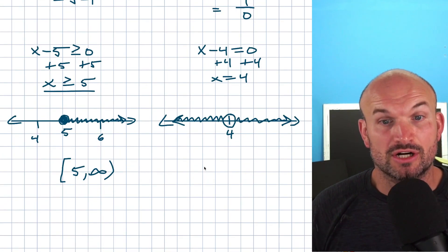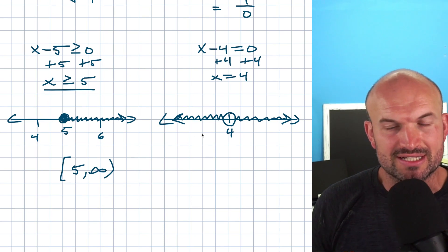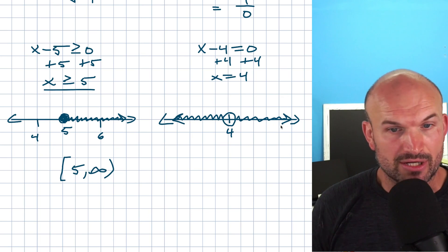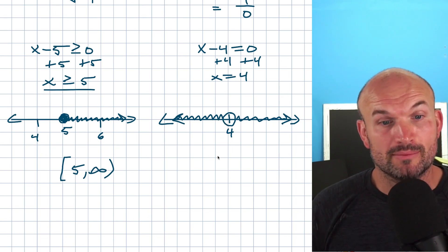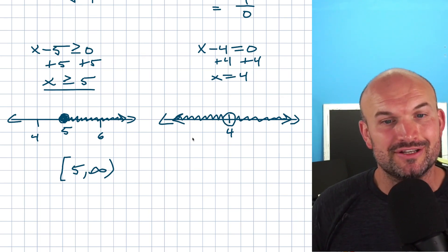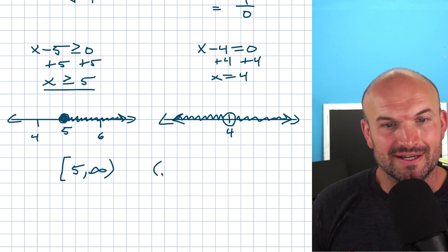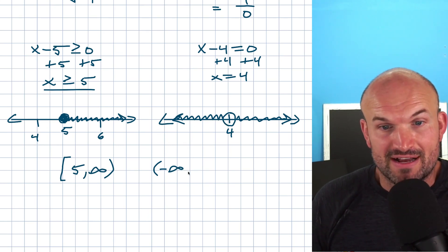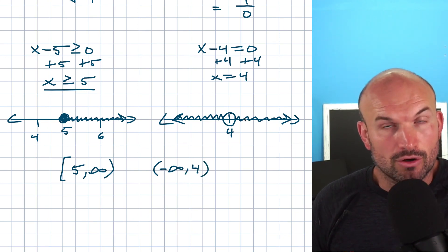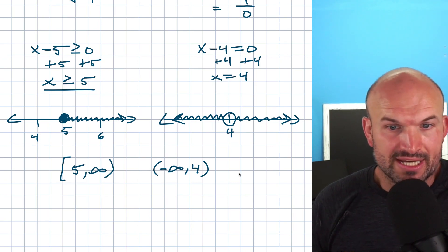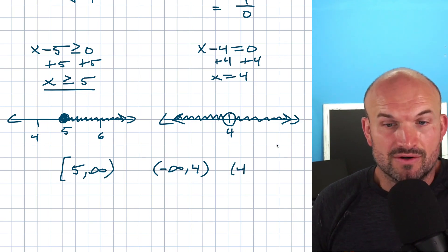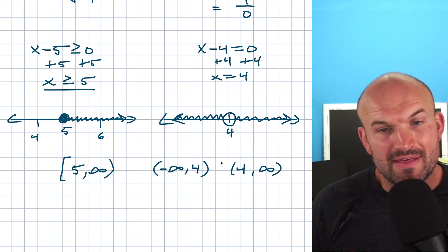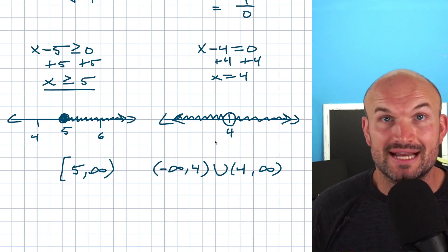When writing this in interval notation, treat it as two separate intervals: one to the left of the undefined value and one to the right. Since 4 is undefined, use parentheses around it. Negative infinity is also undefined, so use parentheses there too. The domain goes from negative infinity to 4, and then from 4 to positive infinity. Connect them with a union symbol: (-∞, 4) ∪ (4, ∞).